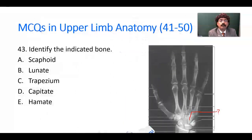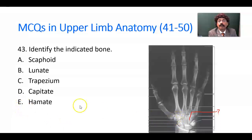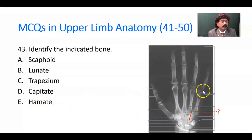Question number 43: Identify the indicated bone. This is the scaphoid. This is the lunate. Trapezium goes on this side. Then we have the capitate here. And this is the hamate bone.